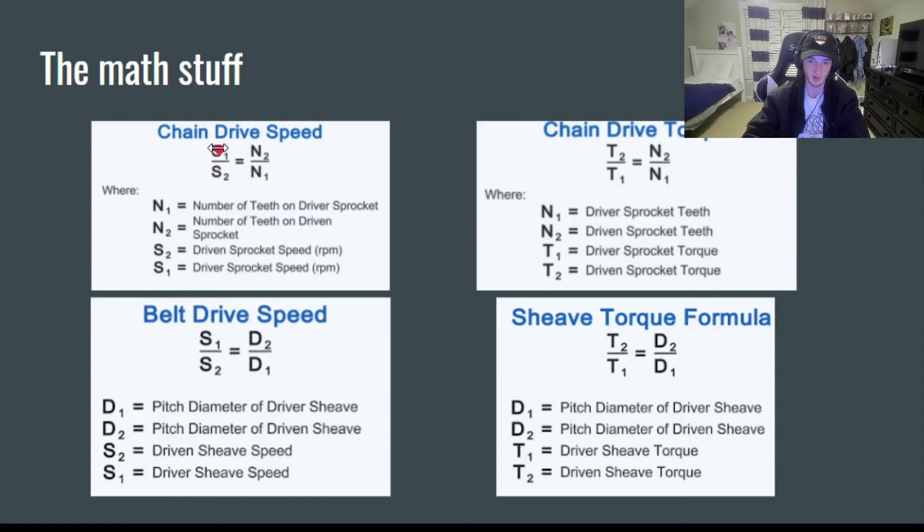And if you also knew that your RPM of your driver sprocket is 50, that would be 50 over x equals 0.5. You do some math and you can figure out that's 50 times 50 divided by one half is 100.